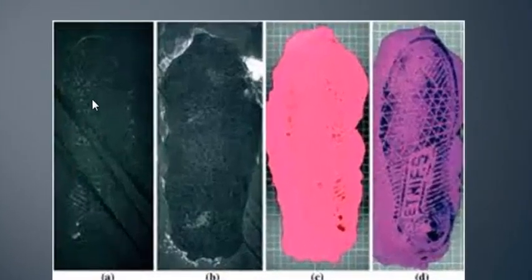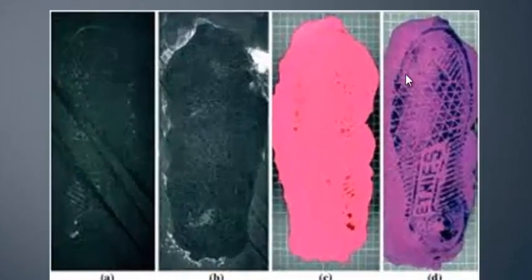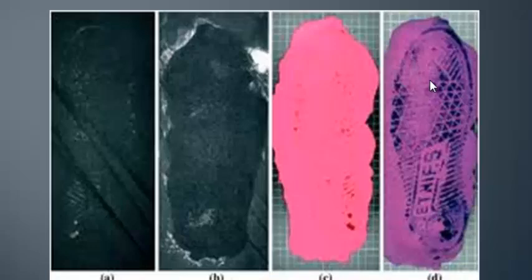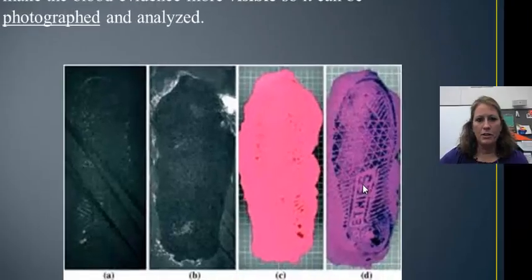As we progress, we can see different footprints, and by the time they apply it, it will be a purple color, violet. They can actually see the type or make of the shoe by the time they finish processing it.